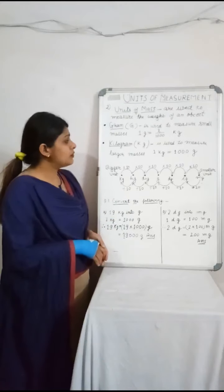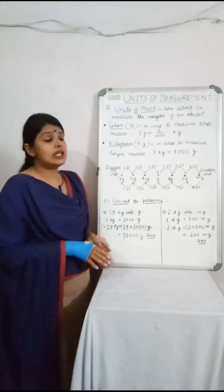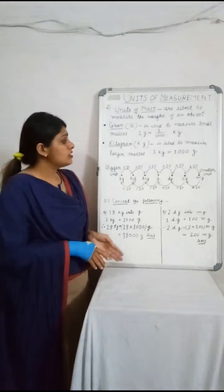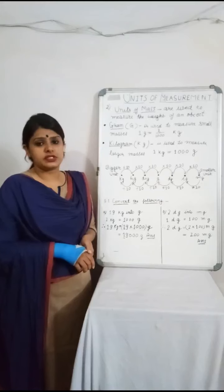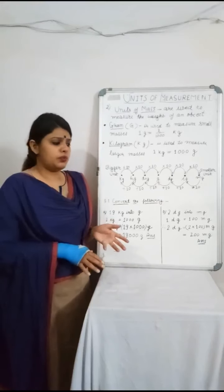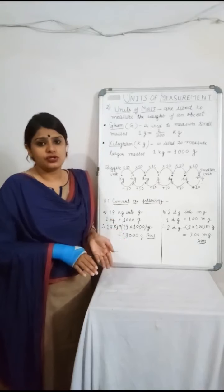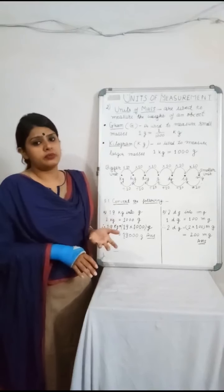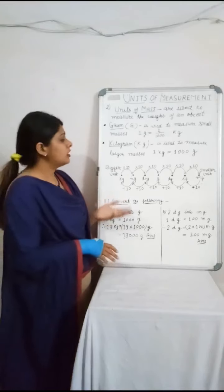Next is kilograms. Kilograms are used to measure larger masses that have more weight, and 1 kg is equal to 1000 grams. So suppose if we have to measure the weight of 1 kg of rice, that is in kg — we use kg to measure larger weight amounts.